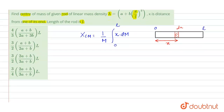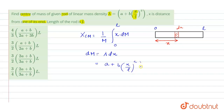The value of dm equals lambda dx, where lambda is the linear mass density. The given value of lambda is a plus bx upon l squared, so dm equals (a + bx/l²) dx.